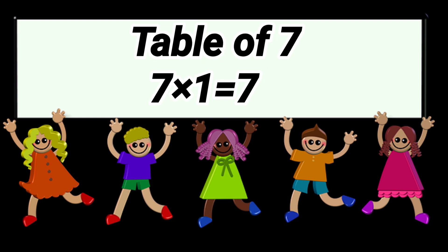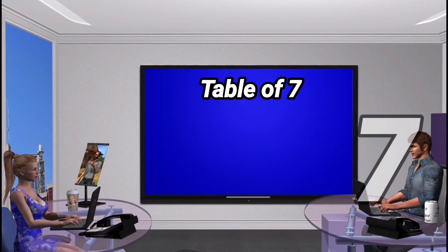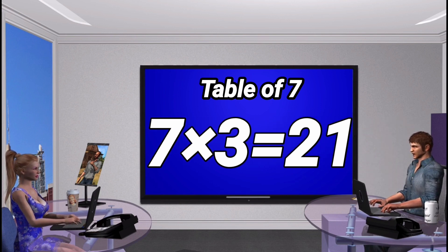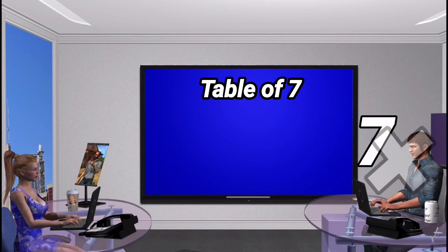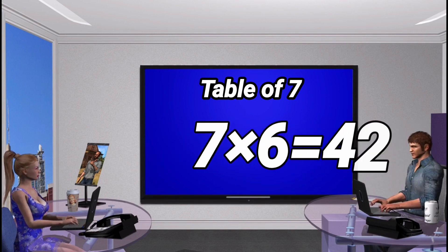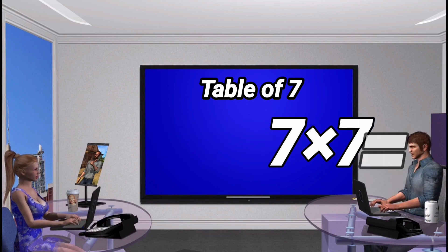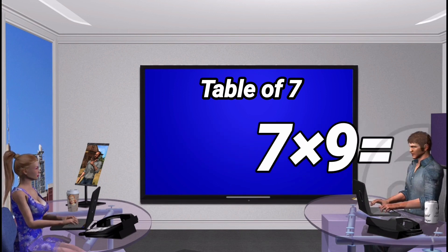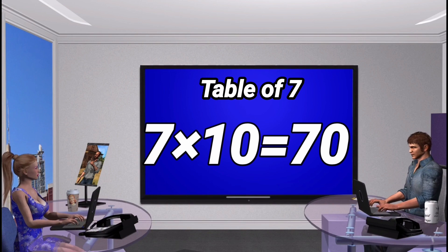Table of 7. 7 times 1 is 7. 7 times 2 is 14. 7 times 3 is 21. 7 times 4 is 28. 7 times 5 is 35. 7 times 6 is 42. 7 times 7 is 49. 7 times 8 is 56. 7 times 9 is 63. 7 times 10 is 70.